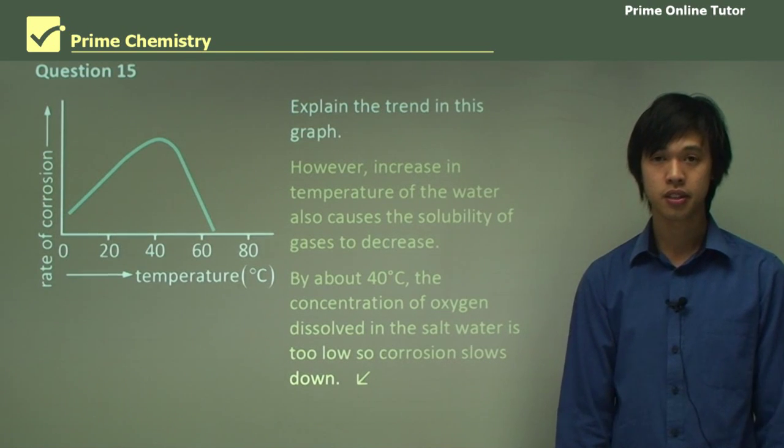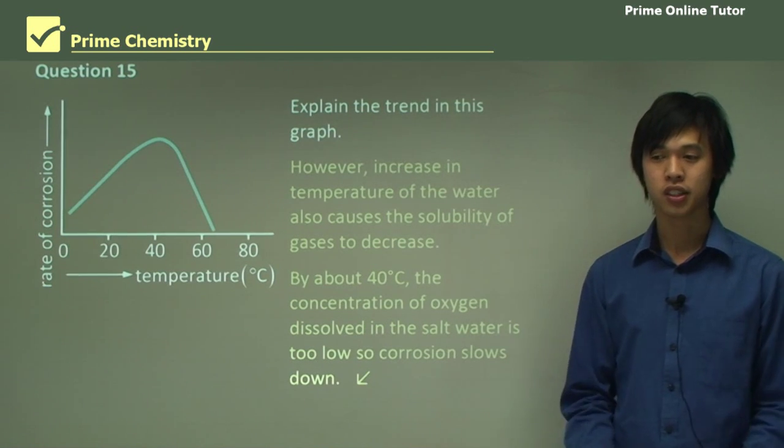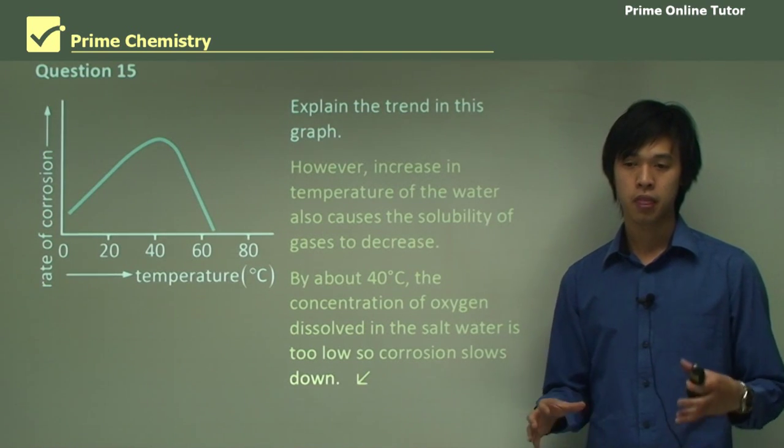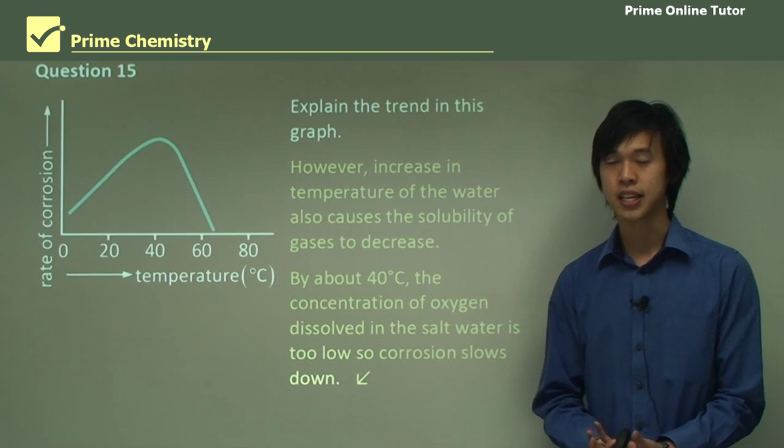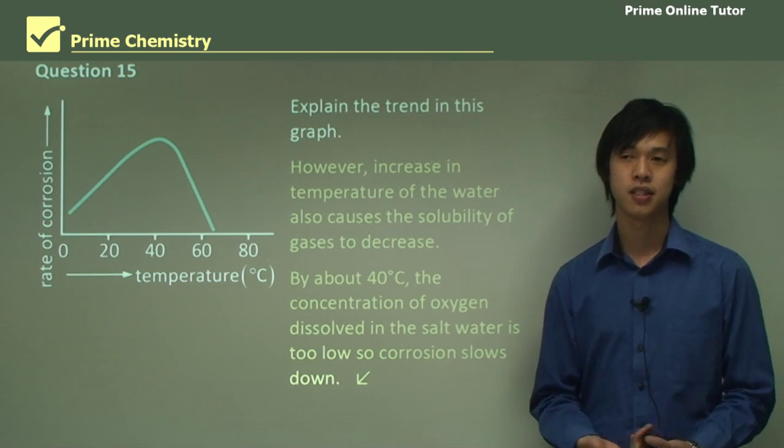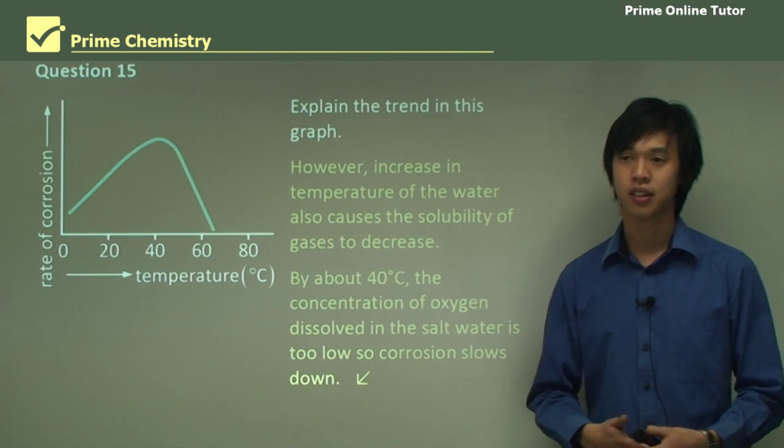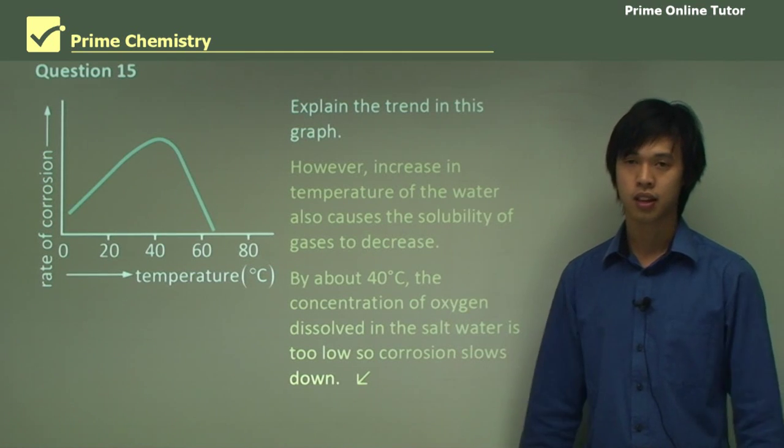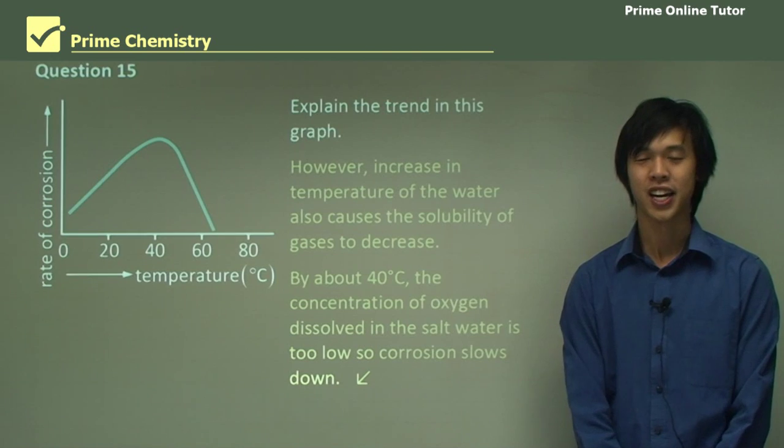So that concludes today's lesson on corrosion predictions at depth. So we've looked at what are the predictions that we'll get when we look at corrosion at great depths. So what are we expecting to see? And in the future lessons, we'll look at what actually happens at the bottom of the ocean and how does it relate to our predictions that we've given today. So we look forward to seeing you at our next lesson. We'll see you then.